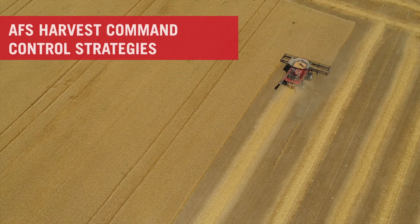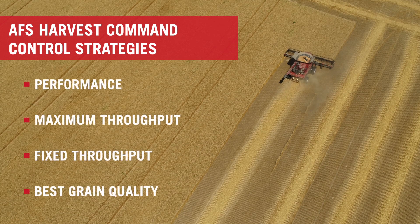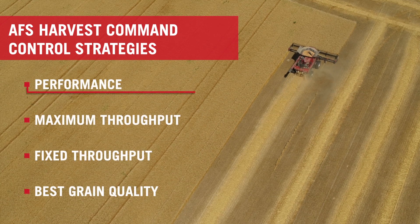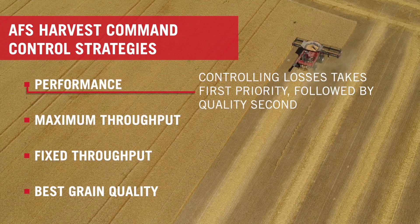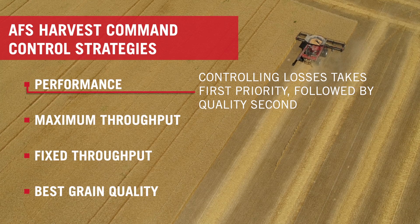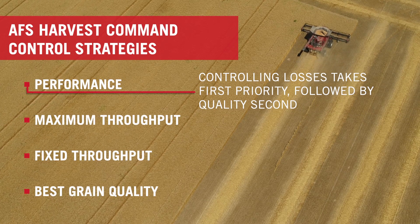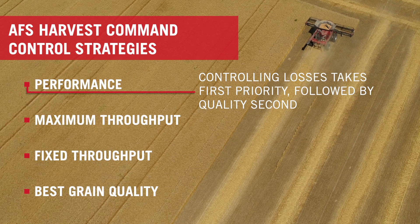Let's quickly go through the four strategies we have here. Selecting performance will equalize combine performance using losses, throughput, and grain quality, where losses are prioritized over quality.